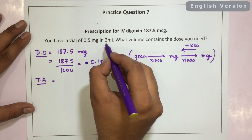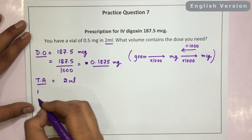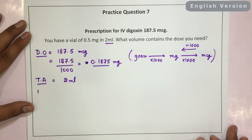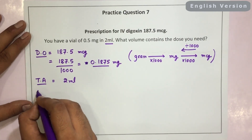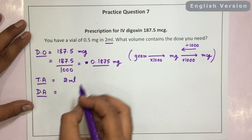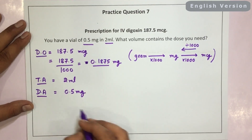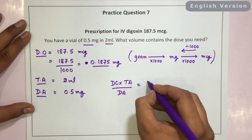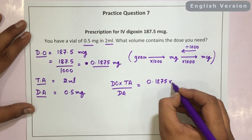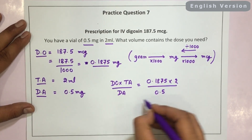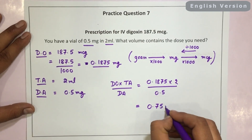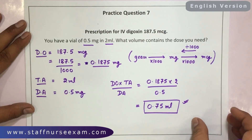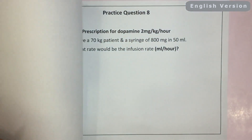Dividing 187.5 by 1000 gives 0.1875 milligrams. So the dose ordered is 0.1875 mg. Total amount in ampoule is 2 ml, and dose in ampoule is 0.5 mg. Applying the formula DO × TA ÷ DA: 0.1875 × 2 ÷ 0.5 = 0.75 ml. The volume that contains the dose we need is 0.75 ml.